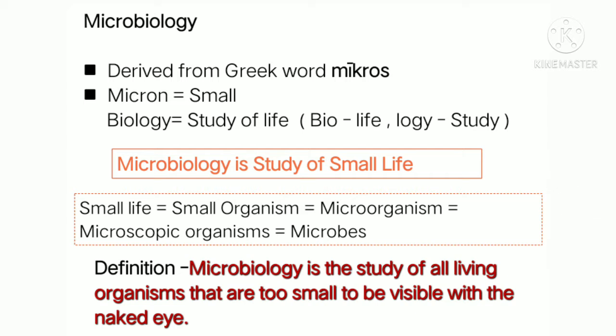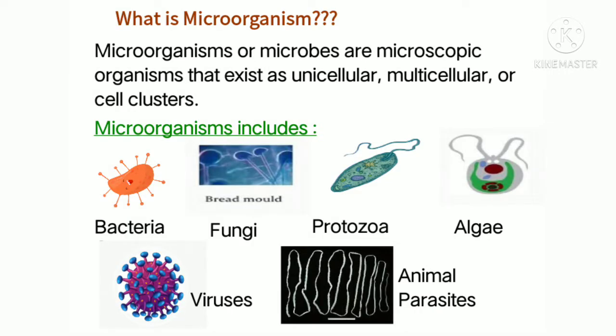The proper definition of microbiology is the field of study of all living organisms that are too small or tiny to be seen with the naked eye. Microorganisms are microscopic in nature — they are small and tiny, require a microscope to be seen, and they live in unicellular, multicellular, or cell cluster form.